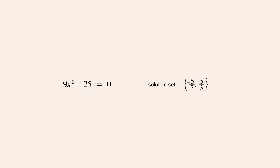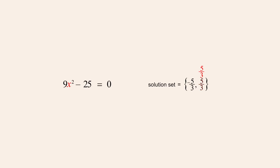To check our results, we substitute these values back into the quadratic equation. Substituting negative 5-thirds for x gives negative 5-thirds squared, which is 25-ninths. Nine times 25-ninths is 25, and 25 minus 25 is zero — so negative 5-thirds is a solution. Likewise, substituting positive 5-thirds gives positive 5-thirds squared, which is again 25-ninths, yielding the same result: zero. So positive and negative 5-thirds are both solutions, and our solution set checks out.